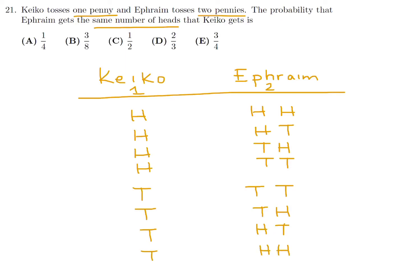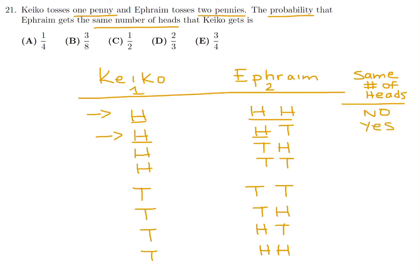Now we have to ask which of these combinations have the same number of heads, because that's what the question is asking. Here we have one head and two heads — same number? No. Here we have one head and one head — yes, same number. In this situation, one head and one head — also yes. Here, one head and zero heads — no. And here, zero heads and zero heads — yes, both have zero heads.